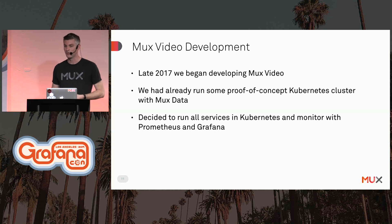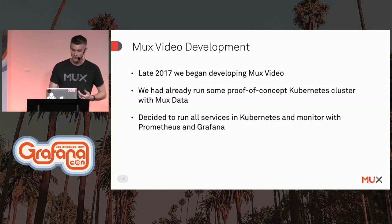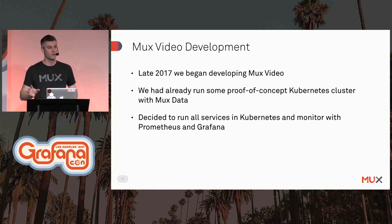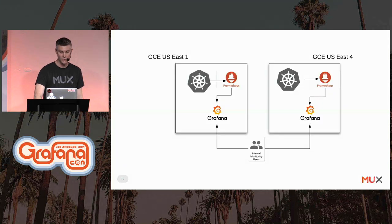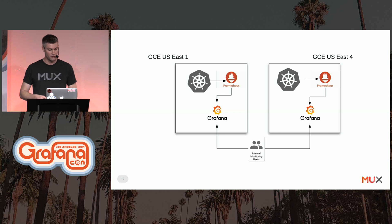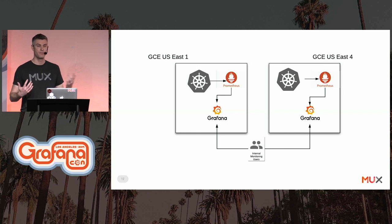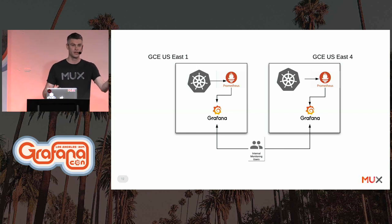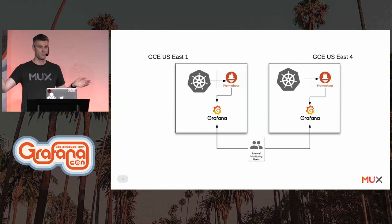As we were designing and building MUX video, we took those experiences into account. In late 2017, we began building MUX video. We had already done a proof-of-concept deployment of Kubernetes with some of our MUX data services and decided to have all MUX video services in Kubernetes. The close integration between Kubernetes and Prometheus made it an obvious choice for application metrics. We launched initially in two Google Cloud regions, East1 and East4, with separate Kubernetes clusters. MUX video has a masterless architecture, and we use a multi-region CockroachDB deployment to make data equally available across all regions.